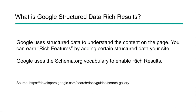So what is Google structured data rich results? Google uses structured data to actually understand the content and the context of a page. You can earn these rich features by adding certain structured data to your specific website pages. Google uses the Schema.org vocabulary to enable rich results, and we can learn about these different types of structured data by going to the developers.google.com site and exploring the search gallery.